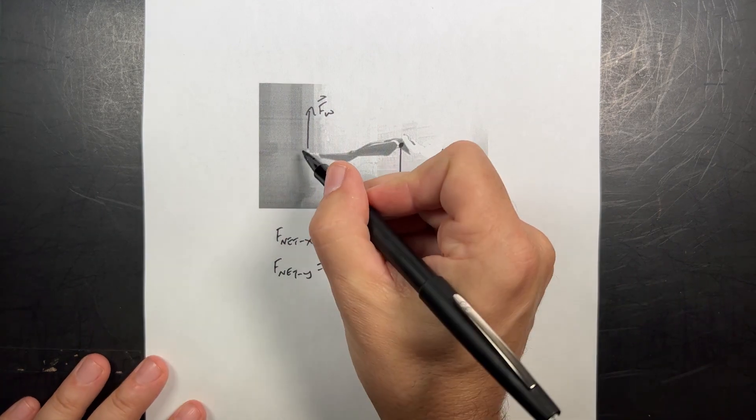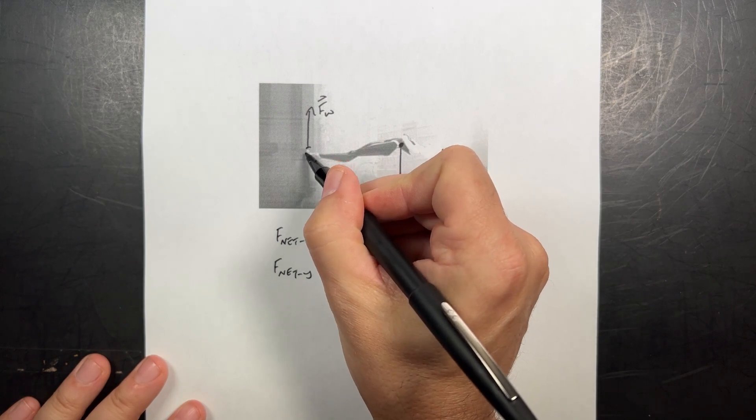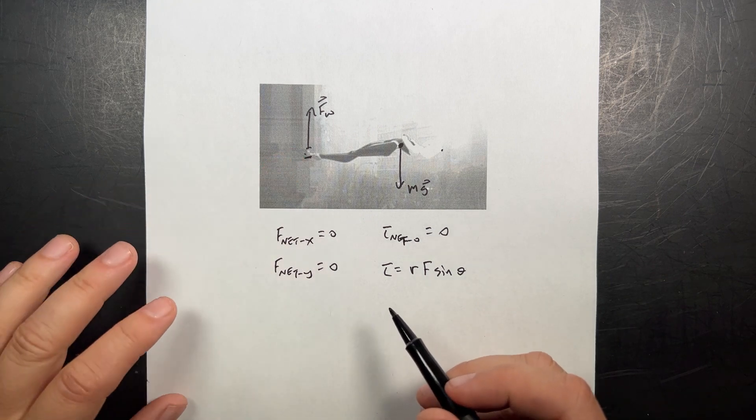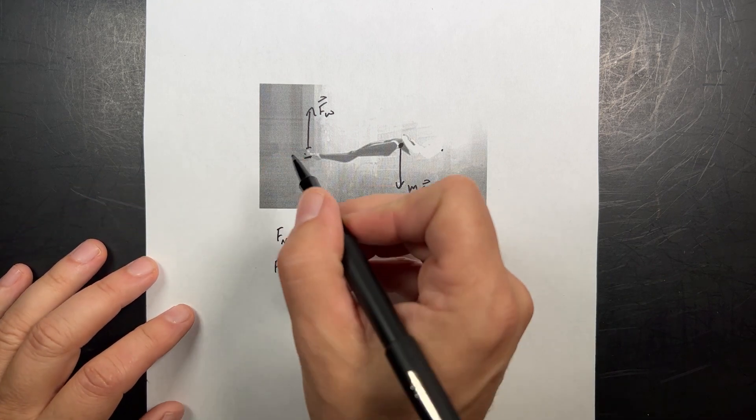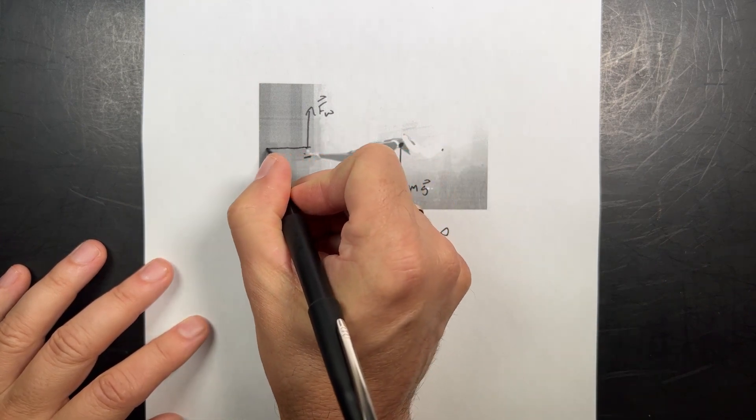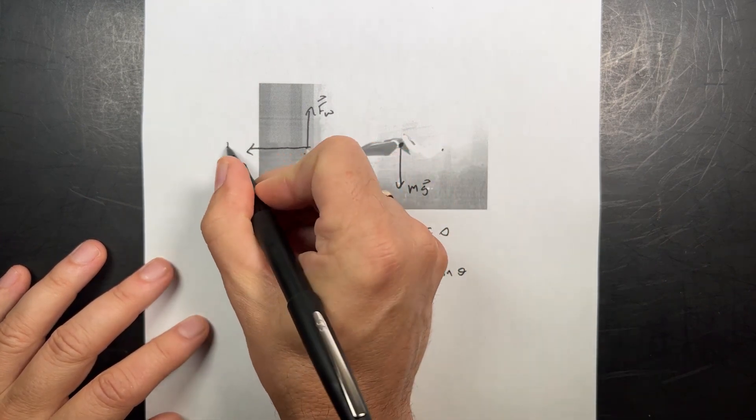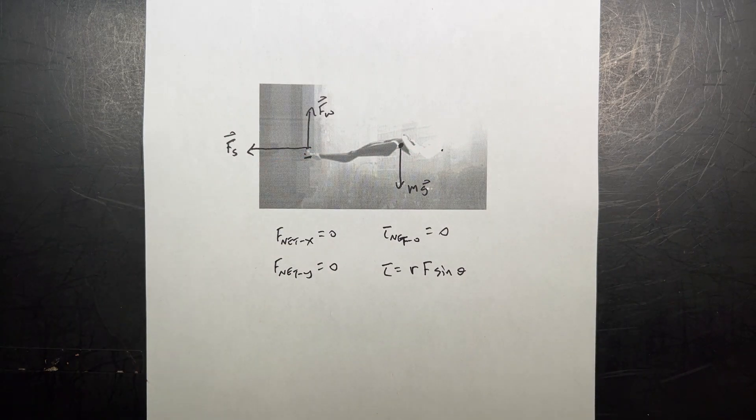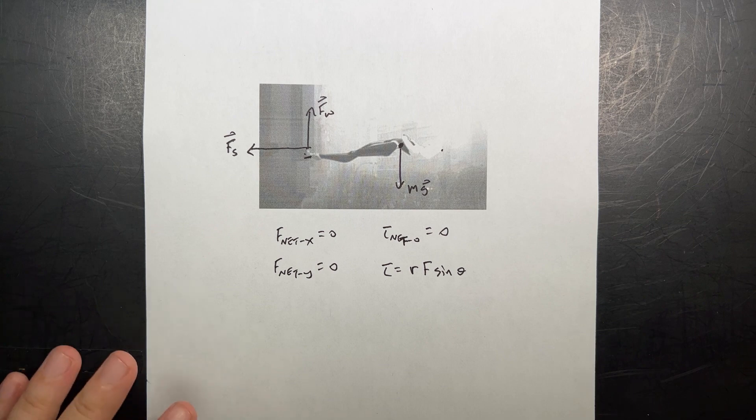So we can fix this by assuming that there is some contact distance on the wall. She's not touching at one point but at two points. So if that's the case, then I can draw two more forces. One is going to be a force this way on Spider-Gwen. I'll call this F_s, the spider force. That's whatever force it is that clings to the wall.